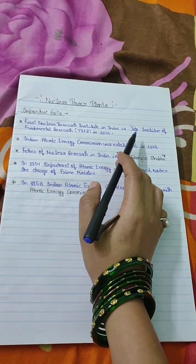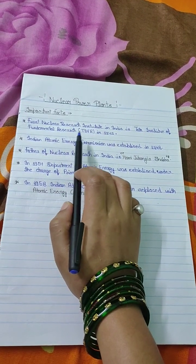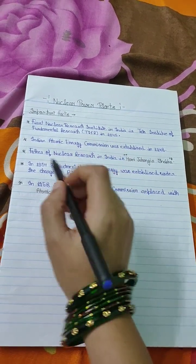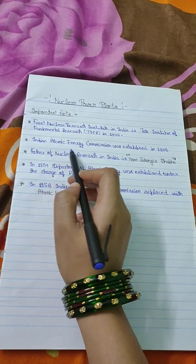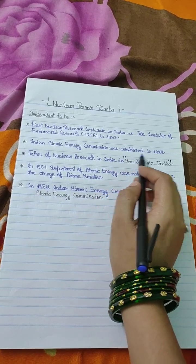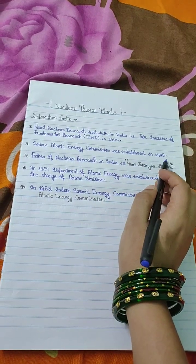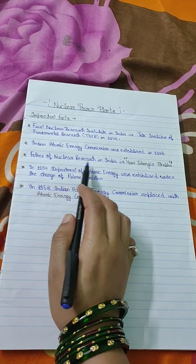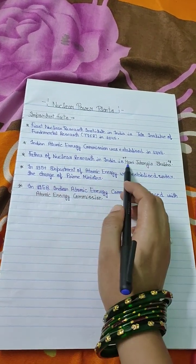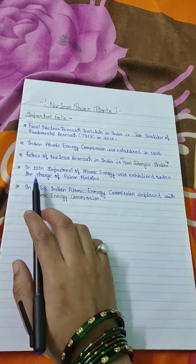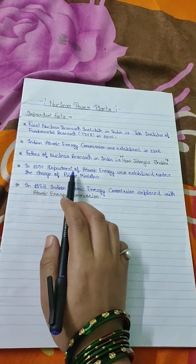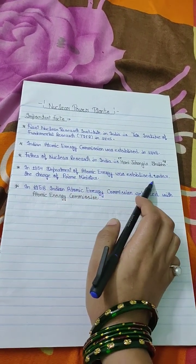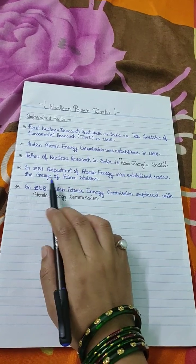The first nuclear research institute in India is the Tata Institute of Fundamental Research (TIFR), established in 1945. The Indian Atomic Energy Commission was established in 1948. The father of nuclear research in India is Homi Jahangir Bhabha. In 1950, the Department of Atomic Energy was established under the charge of the Prime Minister.